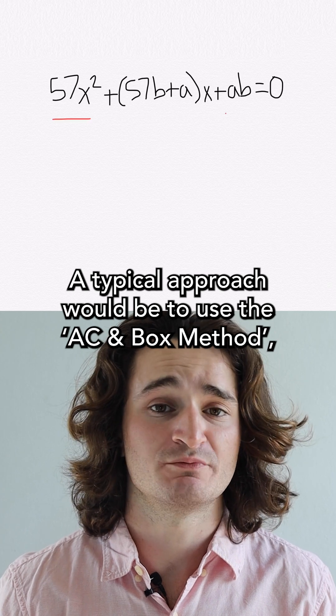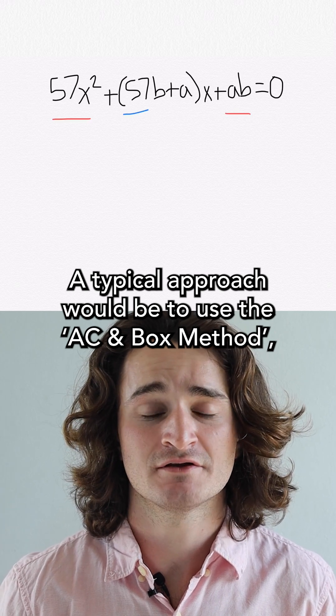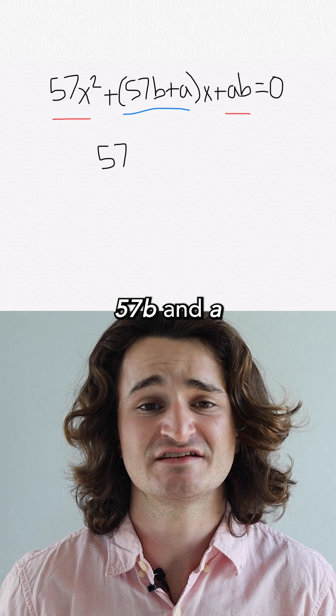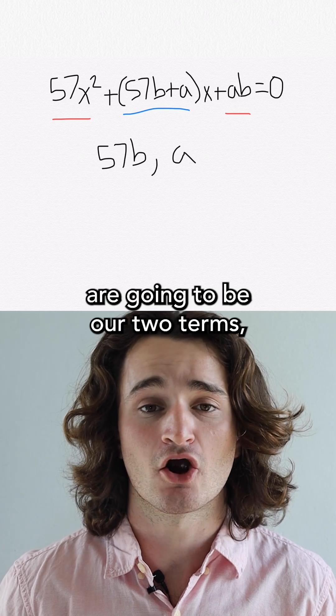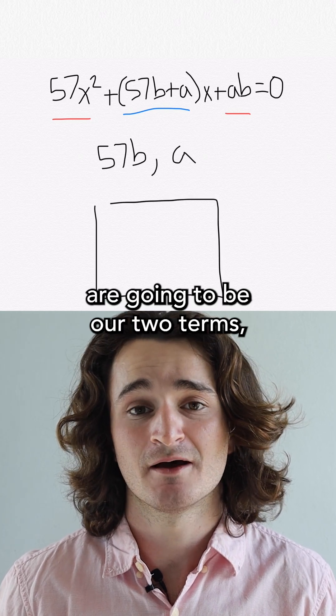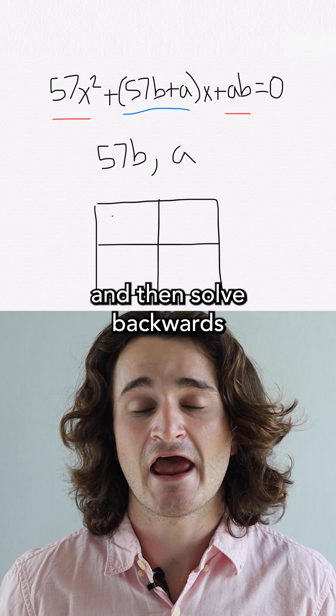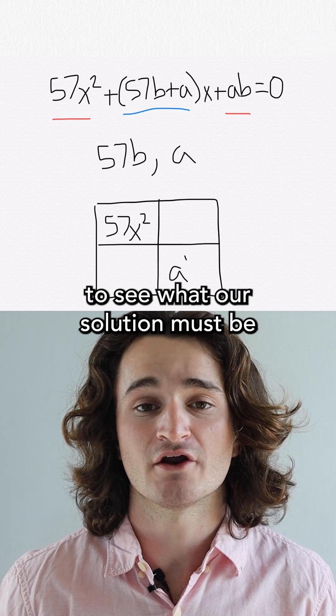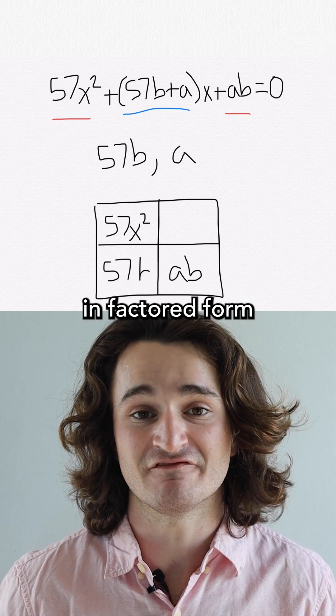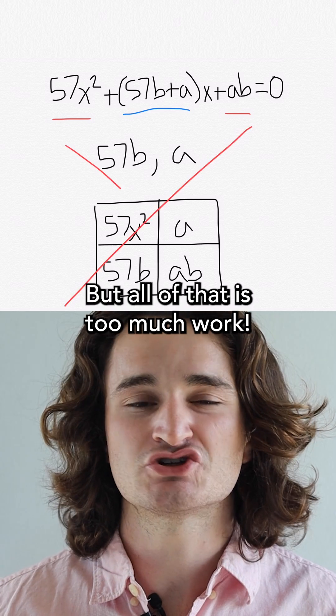A typical approach would be to use the AC and box method where we can identify that 57b and a are going to be our two terms. Plug that into our grid and then solve backwards to see what our solution must be in factor form. But all of that is too much work.